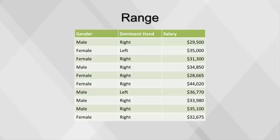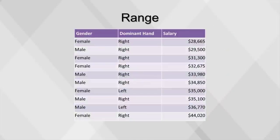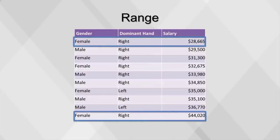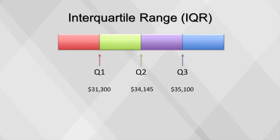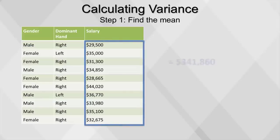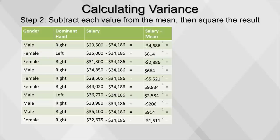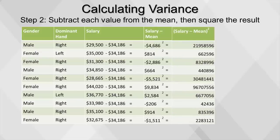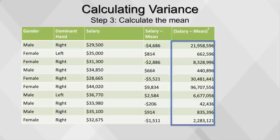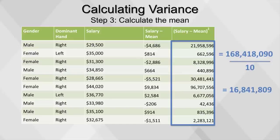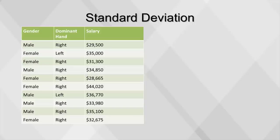The range is the largest number minus the smallest number — first sort from smallest to largest, then subtract the smallest value from the largest value. To find the interquartile range, first separate the data into quartiles, and then subtract Q1 from Q3. To find the variance, first calculate the mean. Then subtract the mean from each value and square the result — by squaring the differences, we remove the possibility of negative values cancelling out the positive values. Next, find the average of the squared differences. To get the variance back into the correct scale, we take the square root of the variance, which results in the standard deviation.